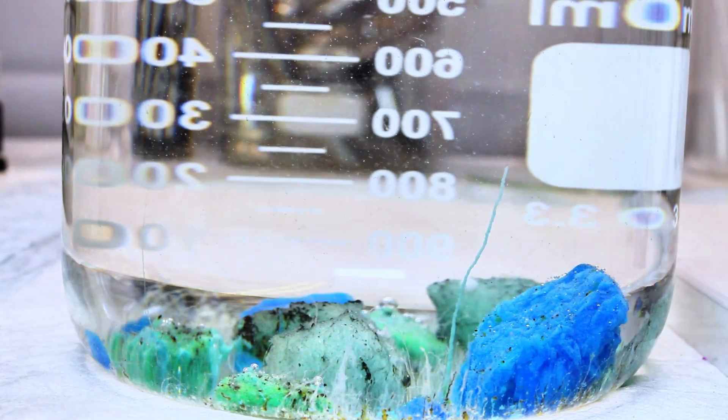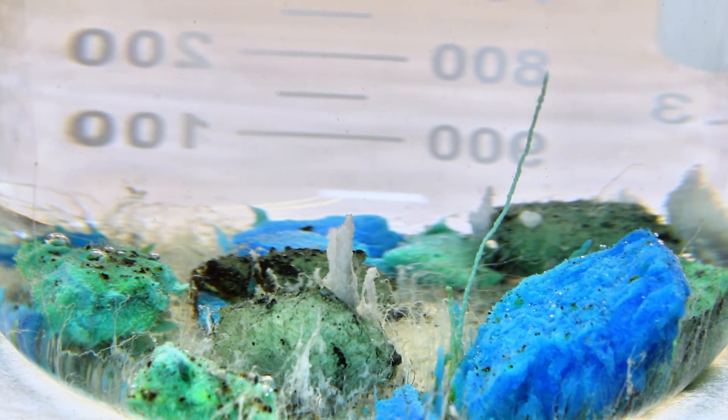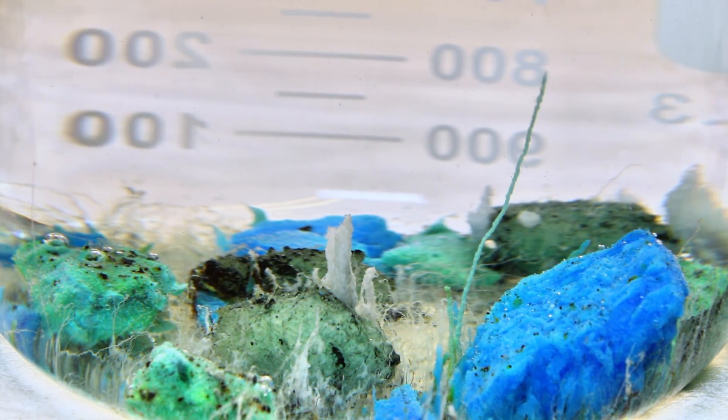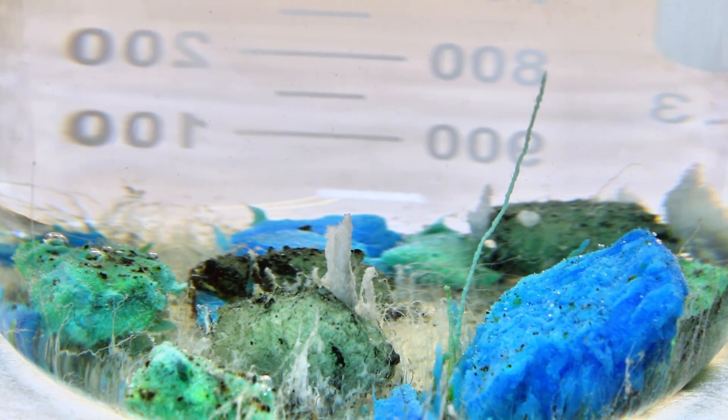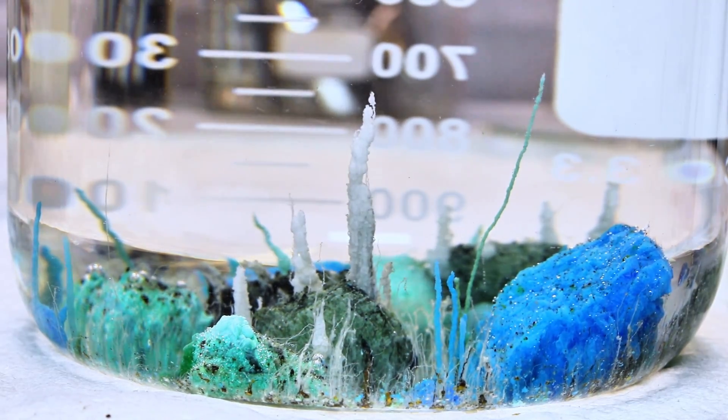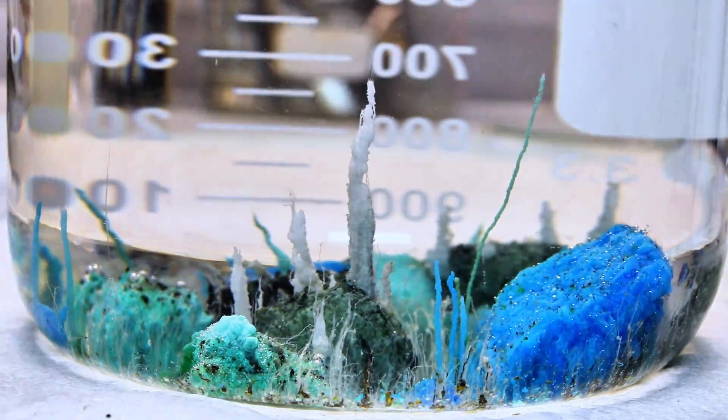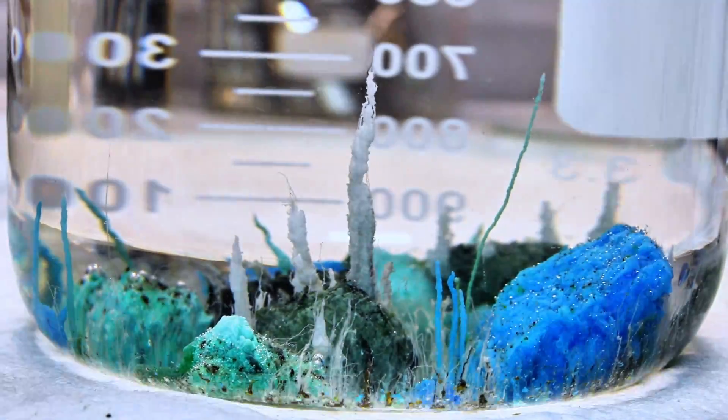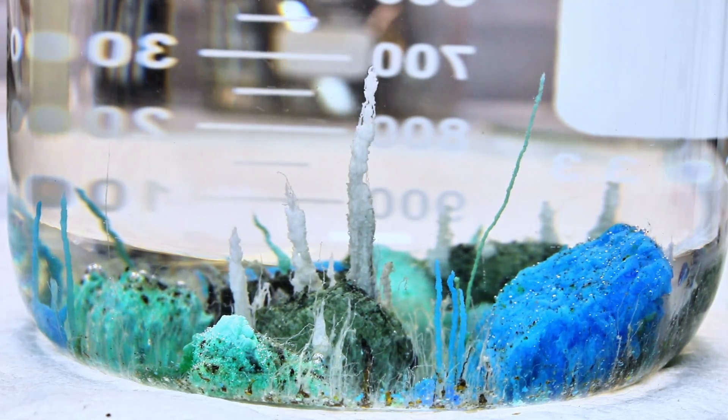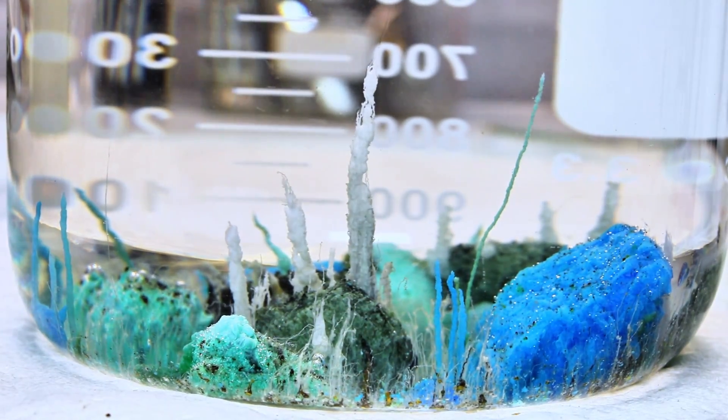Just spitballing off the dome here, but for example, you could add borax to make borosilicate growths. You could also add different alkali or alkaline earth metals such as lithium, calcium, magnesium, barium, or even strontium to make more complex crystals.